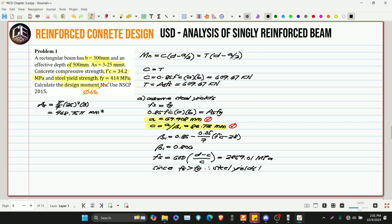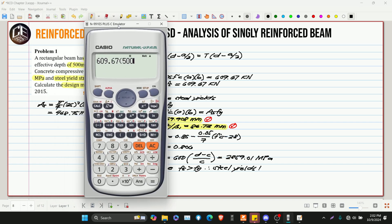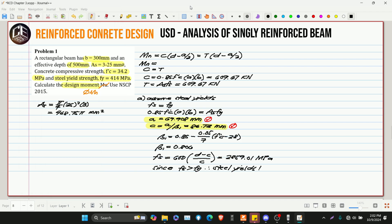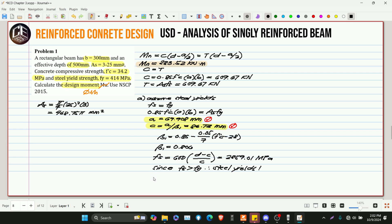Ngayon, makukuha na natin yung Mn. So, Mn is equivalent to 609.67 multiplied by effective depth na 500. Minus A, 69.908 divided by 2. Tapos, i-divide natin ng 1,000 para maging kilo Newton meter. So, 283.52 kilo Newton meter. Pero, ito, hindi pa final answer. Ano pa lang ito? Nominal moment.